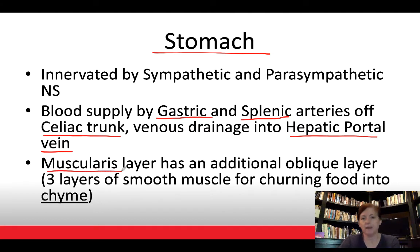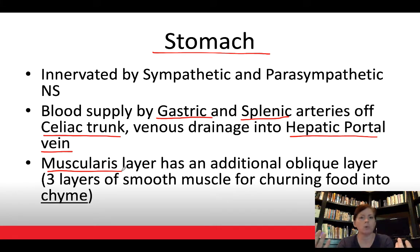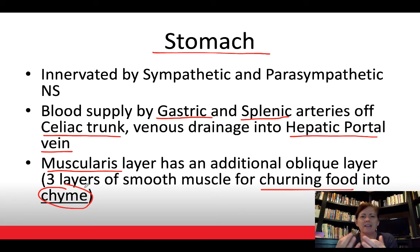The stomach's muscularis layer has an additional third muscle layer. While most digestive tract areas have circular and longitudinal smooth muscle, the stomach adds an oblique layer as well. These three fiber directions — longitudinal, circular, and oblique — allow the stomach to churn food into chyme, which is a sludgy, liquidy substance produced by pulverizing food in the stomach.